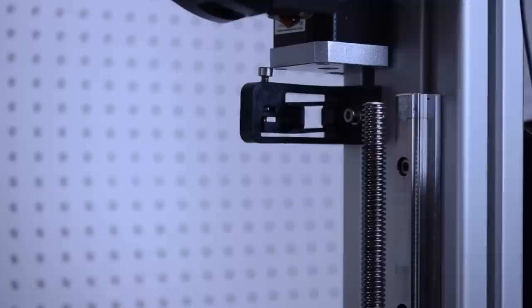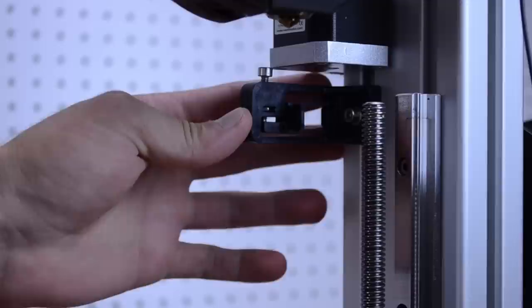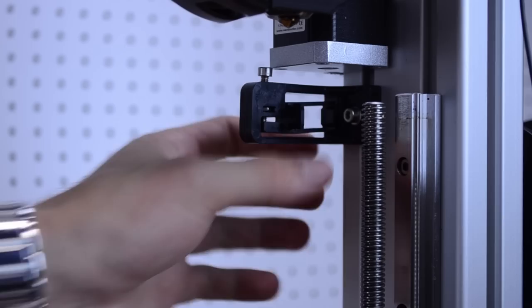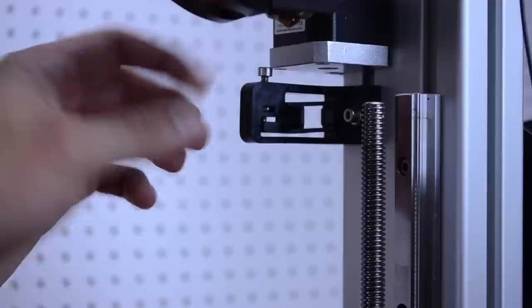When you're calibrating your Z-axis or your bed to the end of the hot end, you're going to be using this little guy over here. To do your rough adjustment, you're going to slide this up and down. In order to do that, you're going to need a hex screw. You're going to need to unscrew this and physically move it up and down to try and get it close.